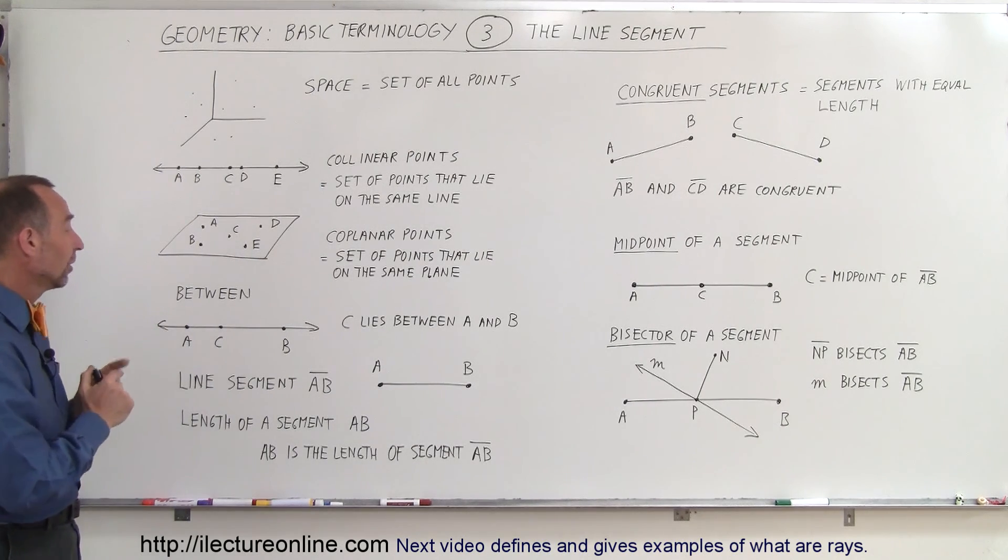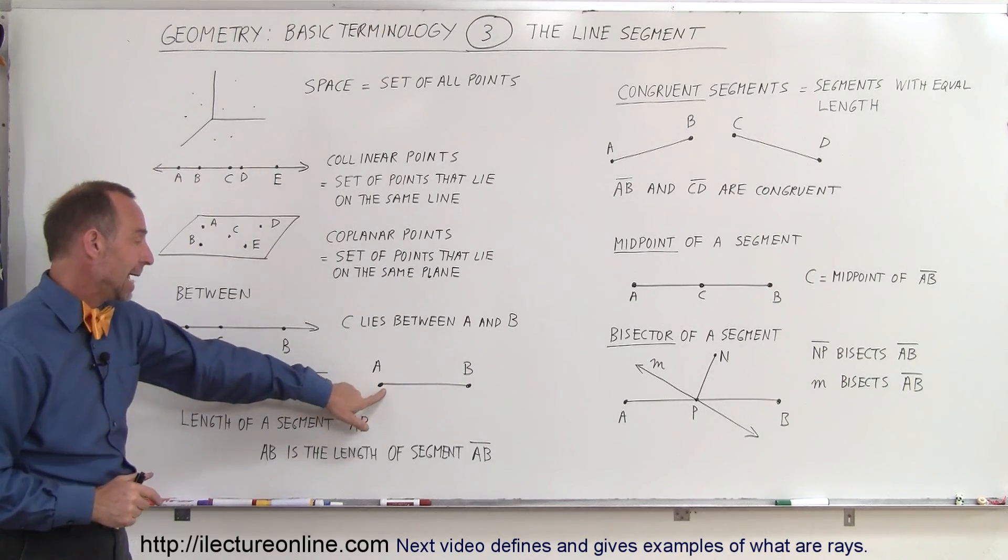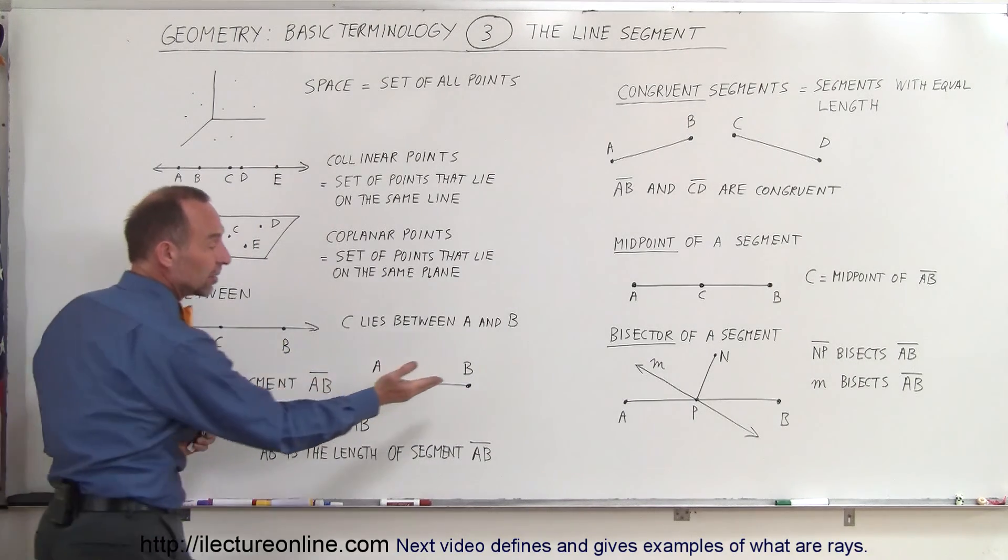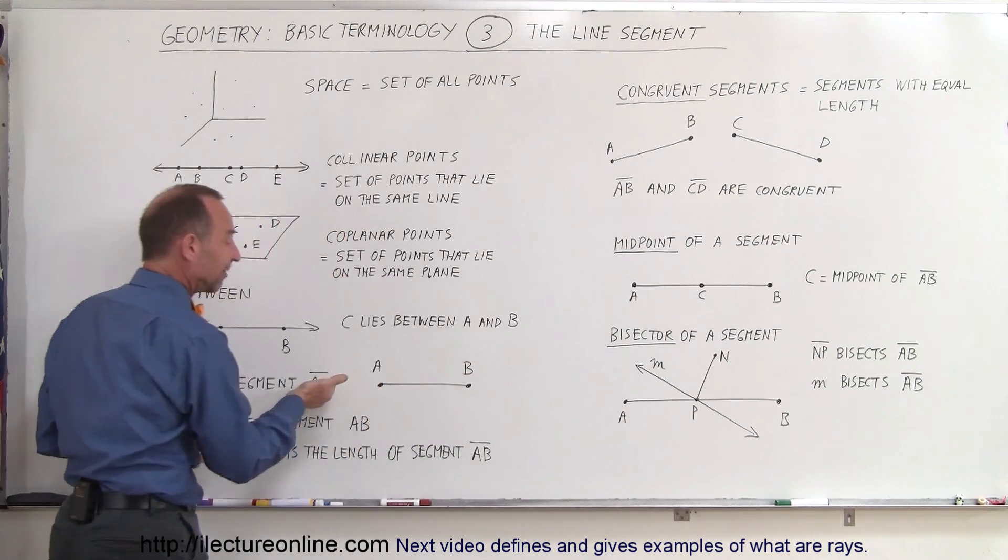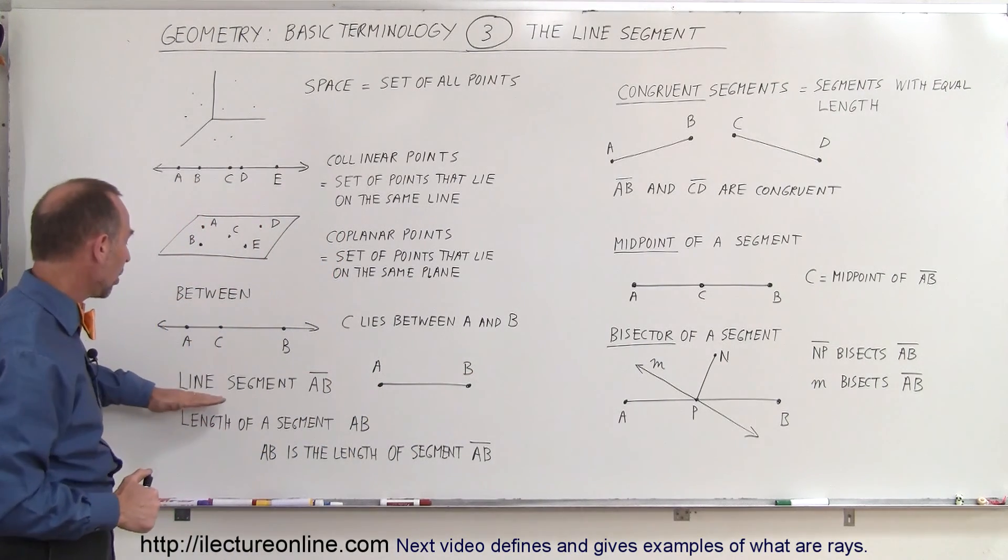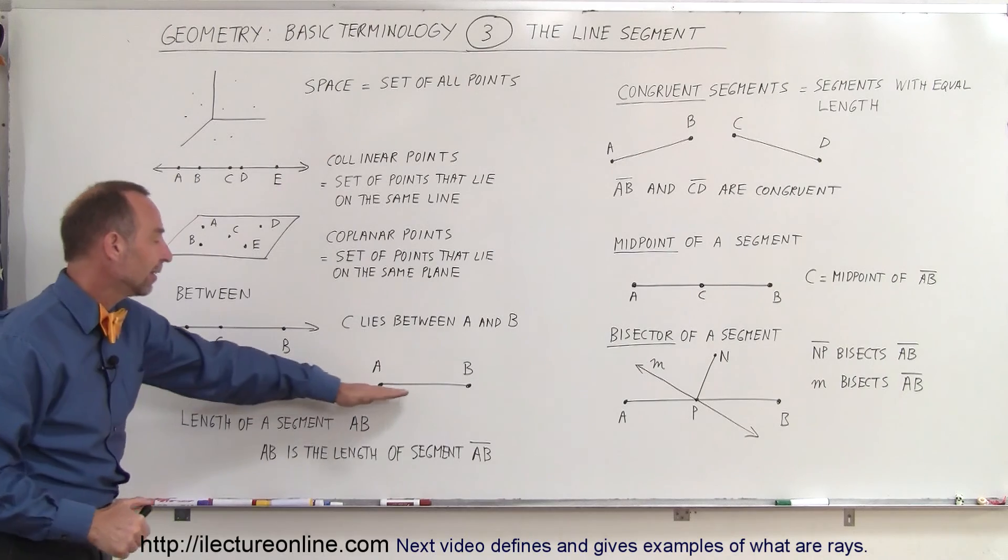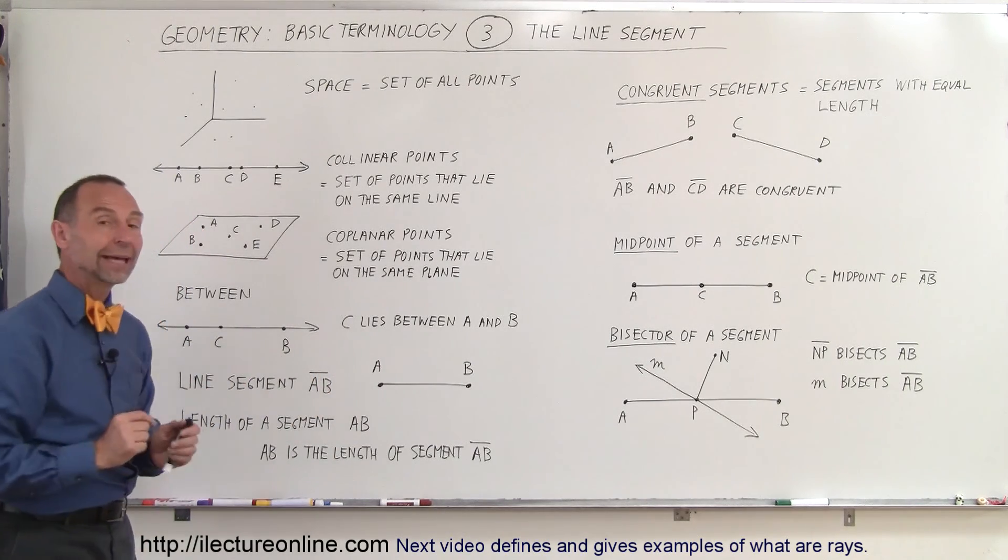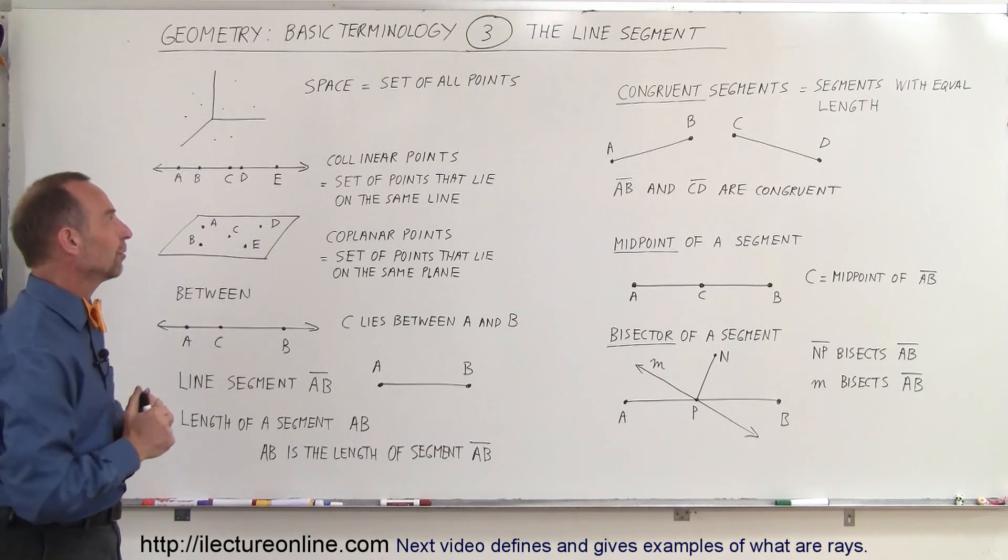Well, we define it with two points, and right here we have the point A and B, and between it we draw a line. Notice there's no line that continues past B in one direction or past A in the other direction. Therefore, we call this line segment AB, and notice there's no arrows in the line above the letters A and B, which denotes it's just a segment.